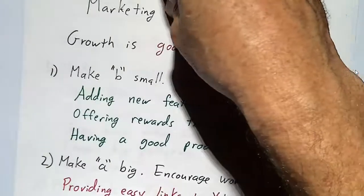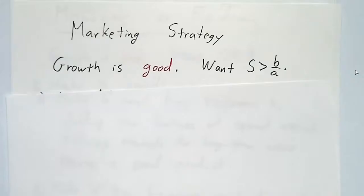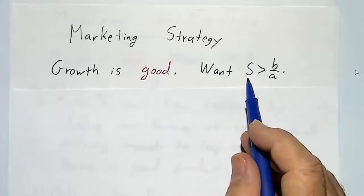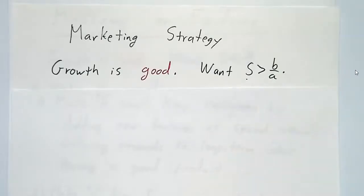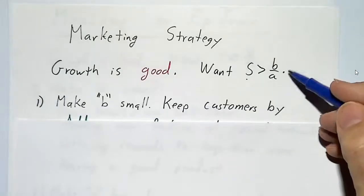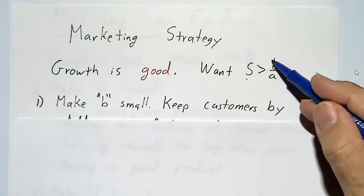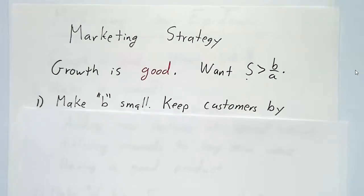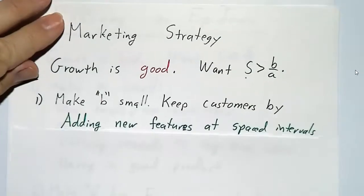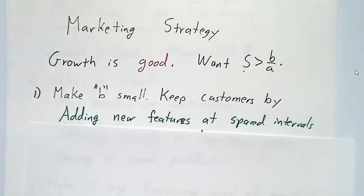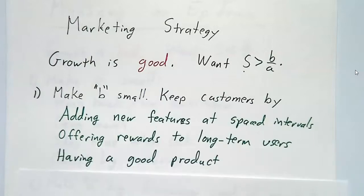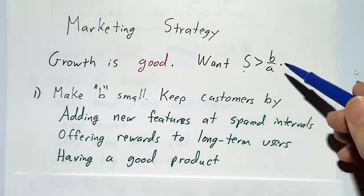So what does that tell us about our strategies? If you're doing marketing, growth is good. You want to have more actives than b over a, so you want the bar to be low. You make the bar low by making b small. B is the rate at which your customers abandon you. So if you add new features at spaced intervals to keep customers' interest, offer rewards to long-term users, and have a good product, then people will stick with your product for a long time and b will be small.